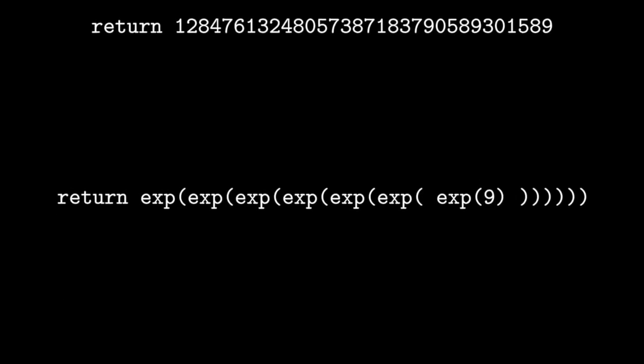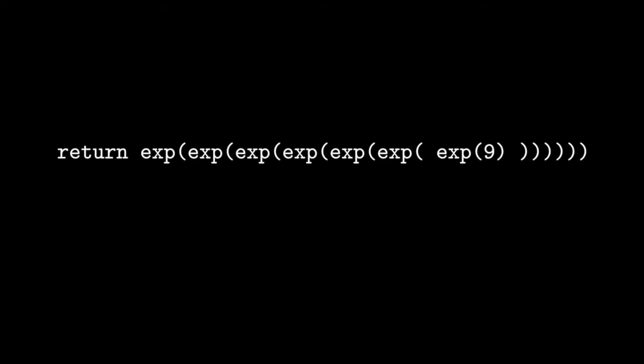We can try using exponents instead, and write something like this. To run this instruction, we just evaluate the innermost function and simplify the expression until we've evaluated everything. It returns the number you get if you take 9 and repeatedly exponentiate it with the base 2, 7 times, or to write it mathematically, this number.